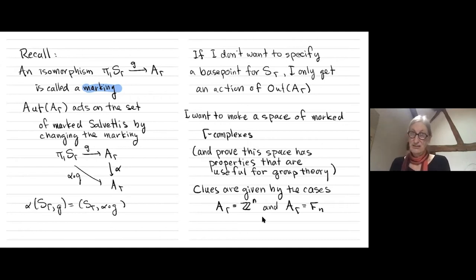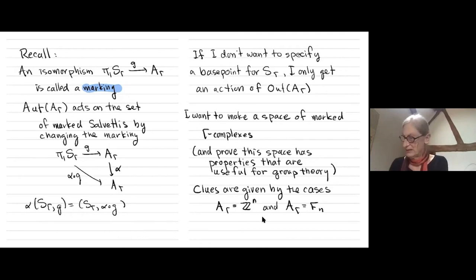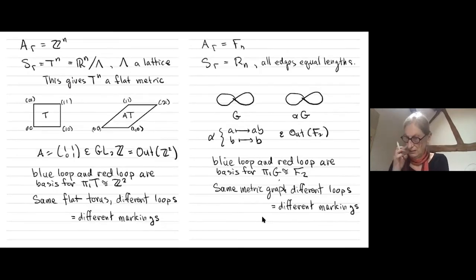If I don't want to specify a base point for these Salvetis, I only get an action of the outer automorphism group, since inner automorphisms basically change the base point. So I want to make a space of marked gamma complexes with properties useful for group theory.